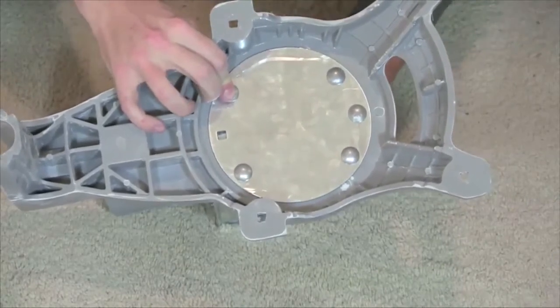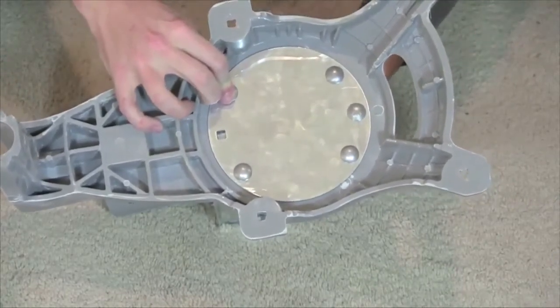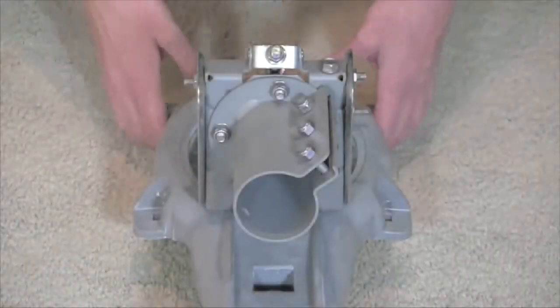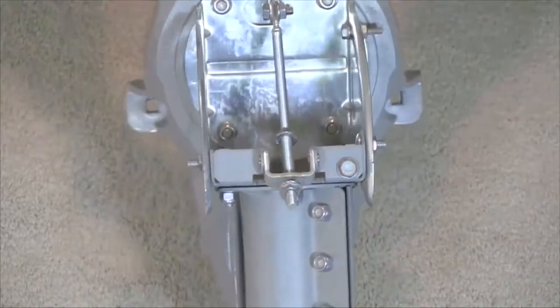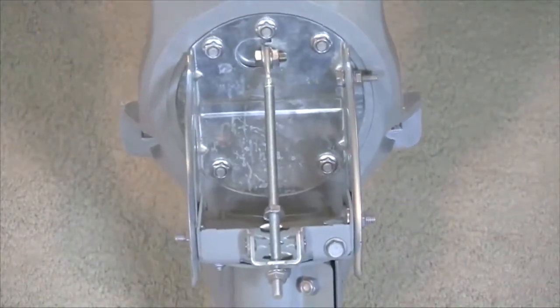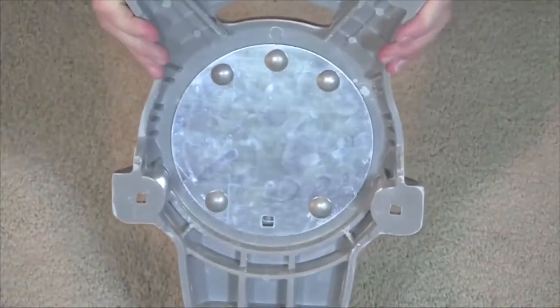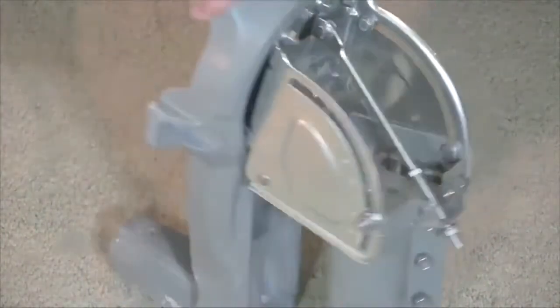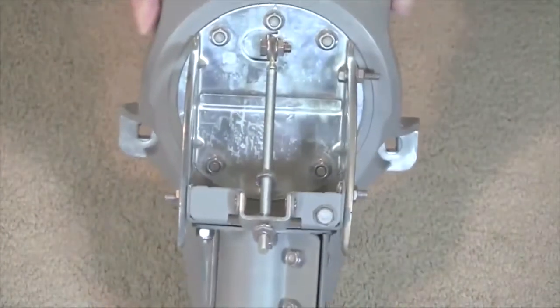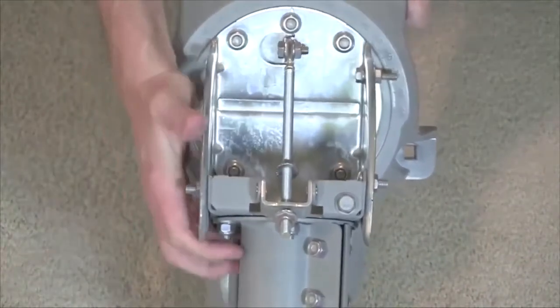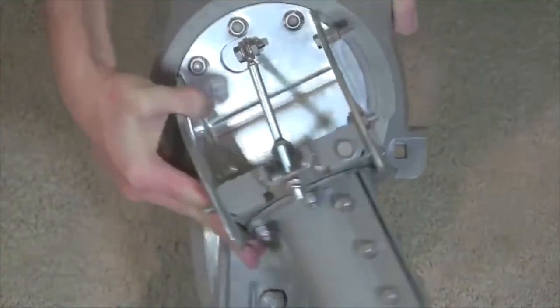When complete, there will be three secured bolts on top and two secured bolts on bottom. Here is another look at the assembly so far. The bolts should be secure, but not so tight that the Azel assembly cannot slide left to right. The Azel should be able to rotate inside the reflector bracket.